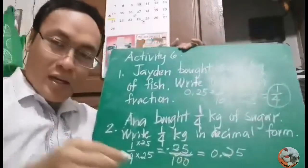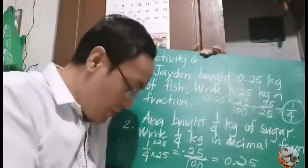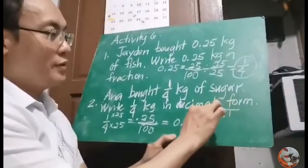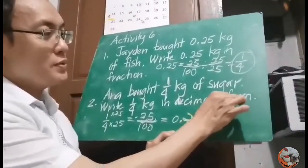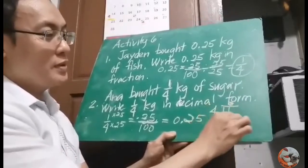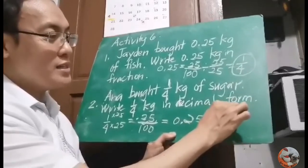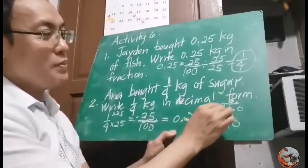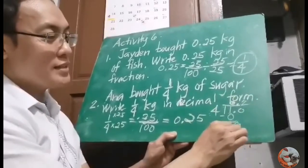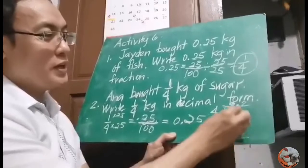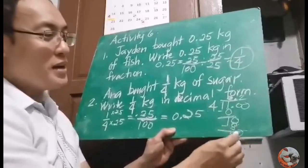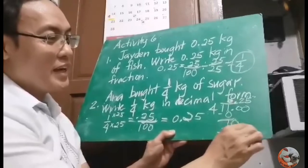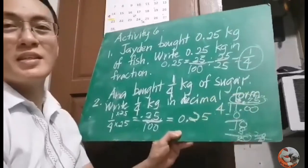Another way is by division: 1 divided by 4. 1 divided by 4 is 0. Bring down; 1 minus 0 is 1. Add decimal point and 0, so put the decimal point above in the quotient and bring down 0. 10 divided by 4 is 2. 2 times 4 is 8. 10 minus 8 is 2. Add another 0; bring down. 20 divided by 4 is 5. 5 times 4 is 20. 20 minus 20 is 0. The answer is 0.25, or 25 hundredths.